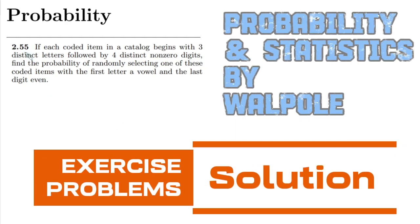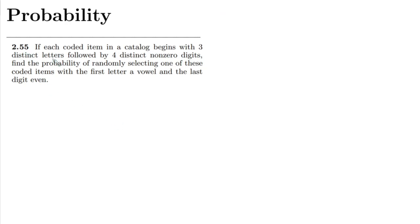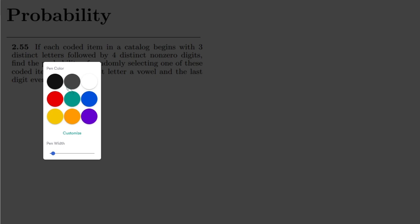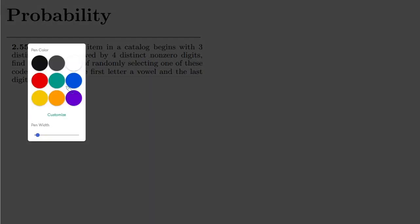Welcome back guys, this is question 2.55. The statement is: if each coded item in a catalog begins with three distinct letters followed by four distinct non-zero digits, we have to find the probability of randomly selecting one of these coded items with the first letter a vowel and the last digit even.